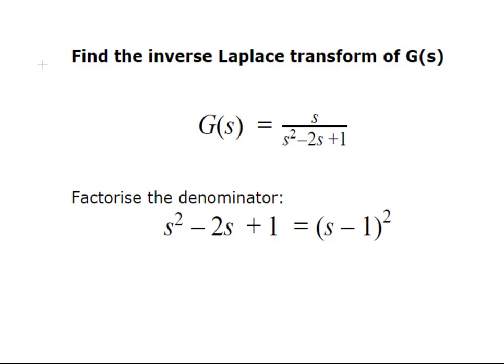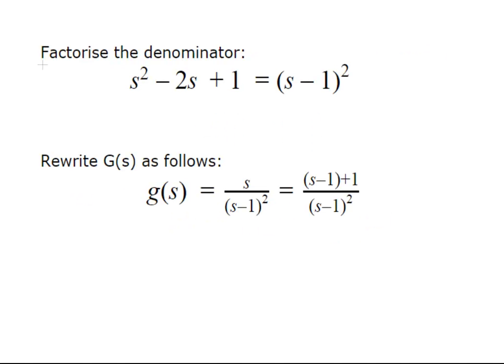So, g of s equals s over s squared minus 2s plus 1. What you should always try to do in a situation like this is factorize the denominator. Here it is a pretty easy factorization: s squared minus 2s plus 1 is s minus 1 squared. If you are not comfortable factorizing quadratic terms like that, it is probably best to concentrate on that first and come back to this. So, what we have is the expression s over s minus 1 squared.